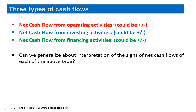For net cash flow from financing activity, we cannot generalize easily because it depends on the other two types. If operating cash flows are strongly positive and sufficient to cover investing activities, we don't need external finance — we may actually repay existing loans. This parallels personal life: if you earn a very high salary and are buying a small house, you don't need a fresh loan; you'd pay off old ones instead.